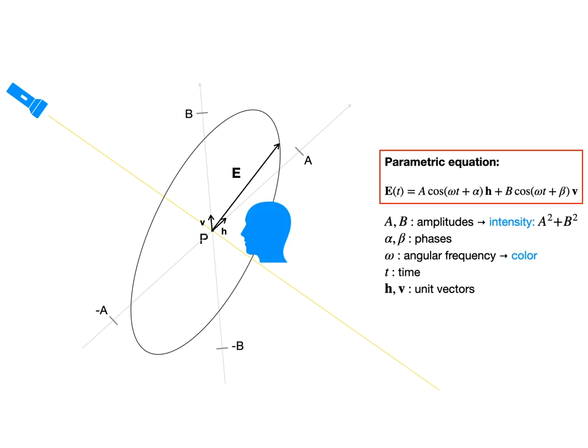The color that our eyes see at p depends on how fast E is going around, that is, on the angular frequency of E's rotation. Also the bigger the ellipse, the more intense we perceive the light. Physically, intensity is proportional to the sum of the squared amplitudes. Here, just for convenience, we simply define intensity at point p as a² plus b².